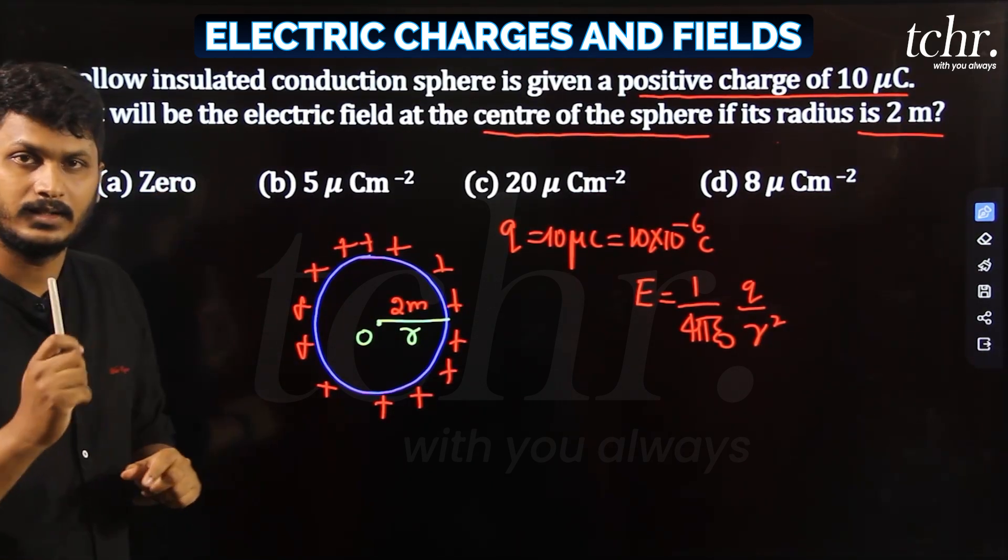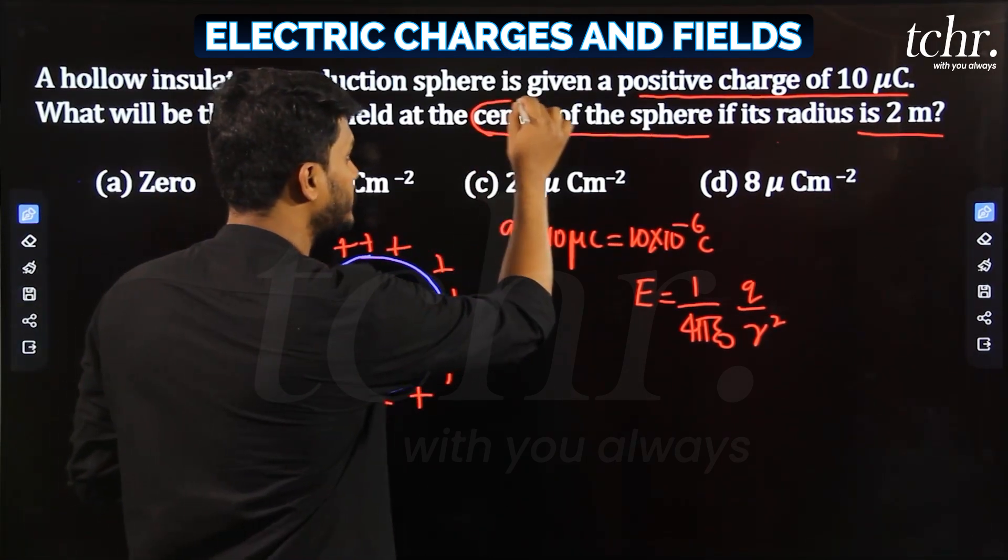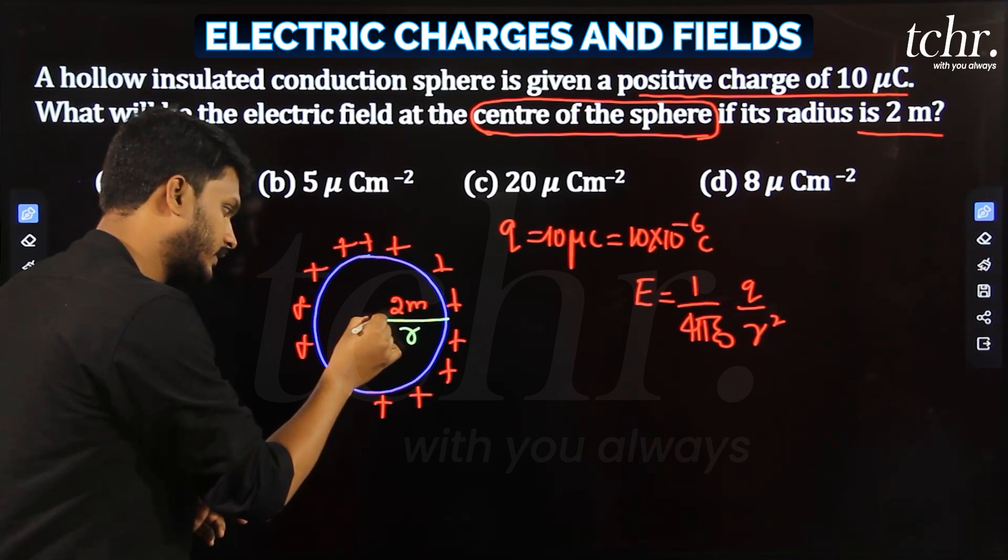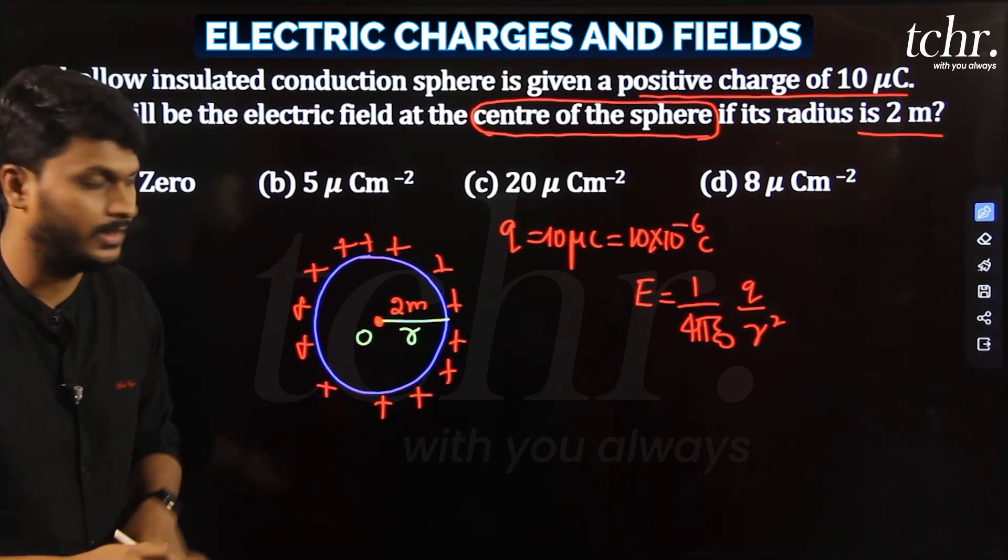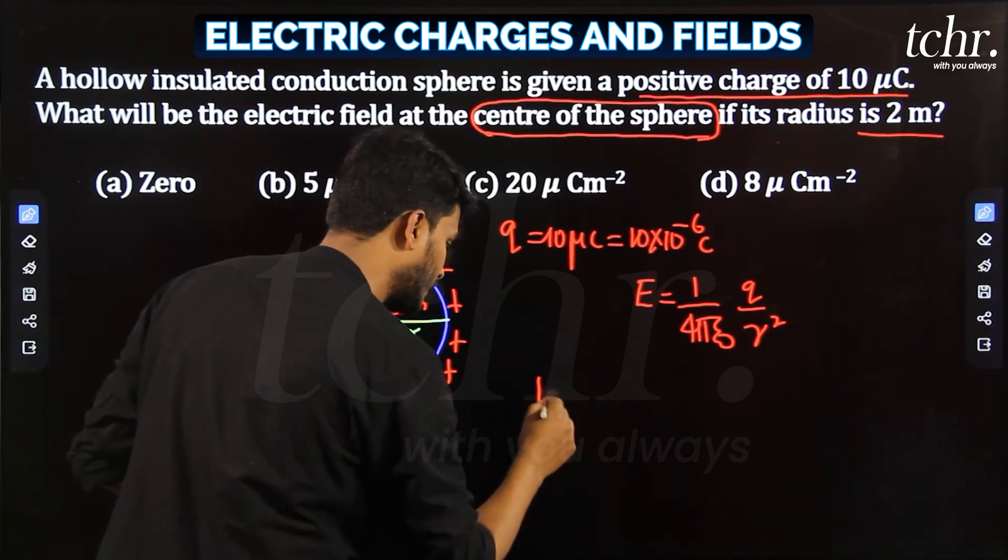Observe the question carefully. They asked us to find what is the electric field intensity at the center of the sphere. Inside, the electric field is zero. Remember, the answer for electric field inside the sphere is always zero.